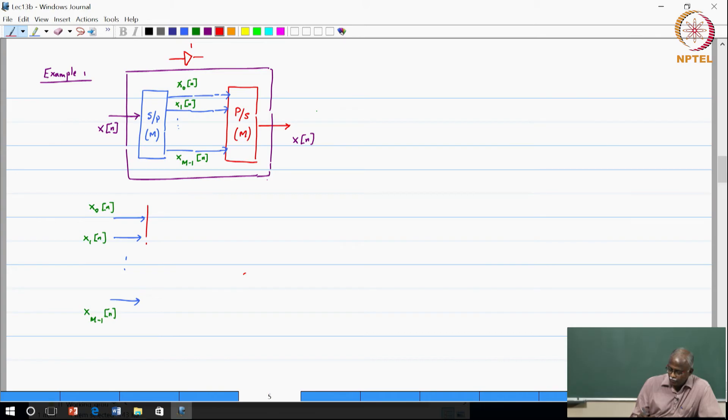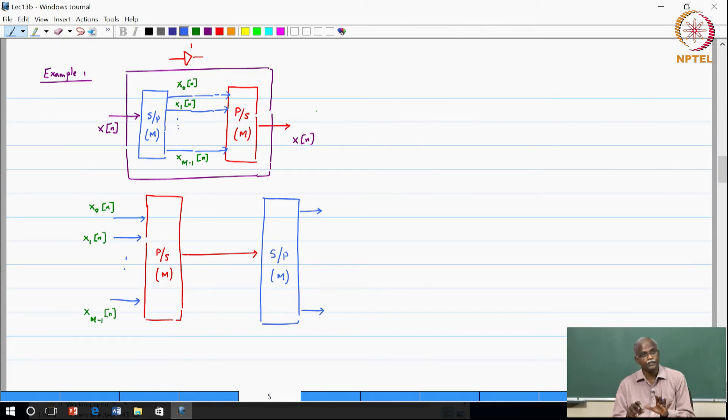Then at the other end I ask you to do a serial to parallel conversion. So this would be a serial to parallel conversion of order M which means that I would once again get M channels coming out. Am I right? Now keep in mind this means that parallel to serial converter with a counter clockwise commutator. This is a serial to parallel converter with a counter clockwise commutator. The basic definitions as I told you were all defined in the previous slides.